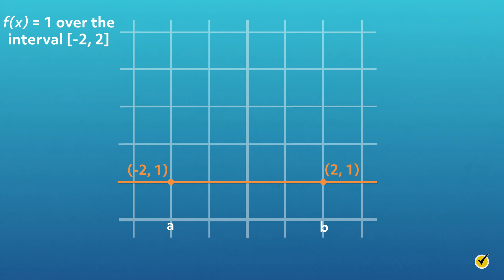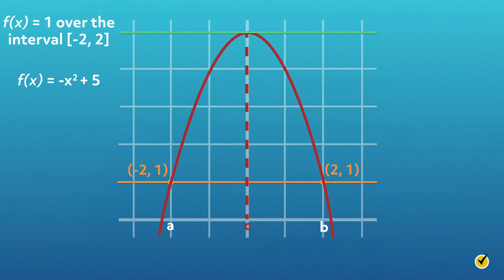What if the endpoints of the interval are the same height? In the case of f equals 1 over the closed interval negative 2 to 2, the average rate of change is 0 since there is no change in height. What about a non-linear function that passes through those same points? The function f equals negative x squared plus 5 passes through those points, and there is a c such that f prime equals 0. This zero-slope secant line scenario actually demonstrates Rolle's theorem.